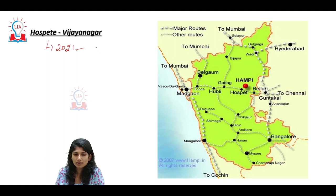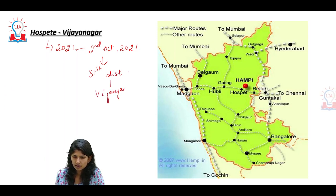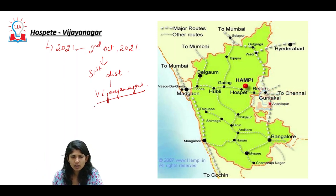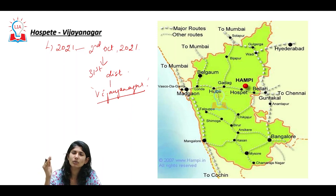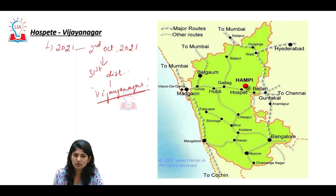On 2nd October 2021, they created the 31st district of Karnataka — that being Vijayanagar district. Given the 300-year-old history whose influences we still carry, that glorious city had to be reminisced, remembered, and carried forward. For that reason, Vijayanagar district — the 31st district — was created from the hiving off of Ballari district on 2nd October 2021.